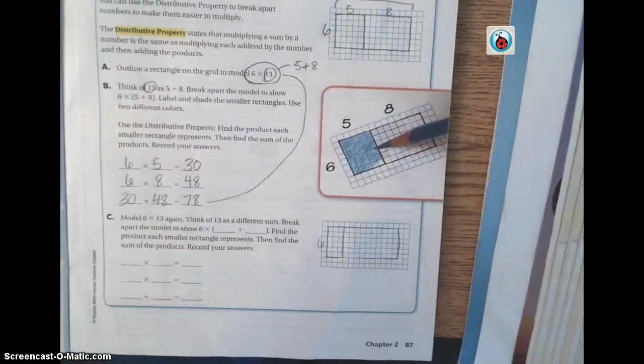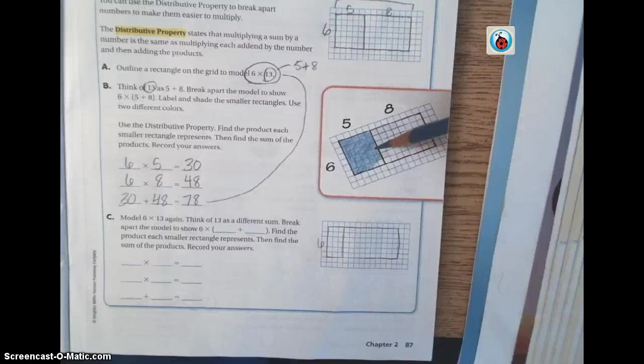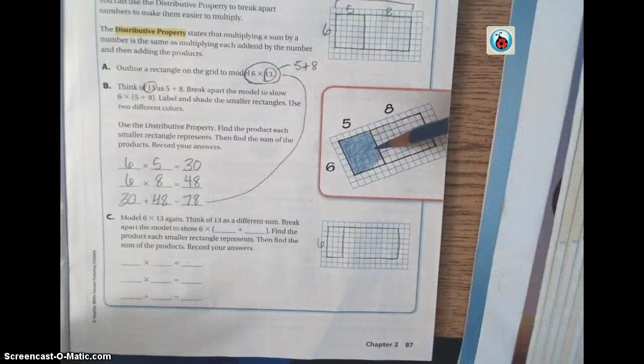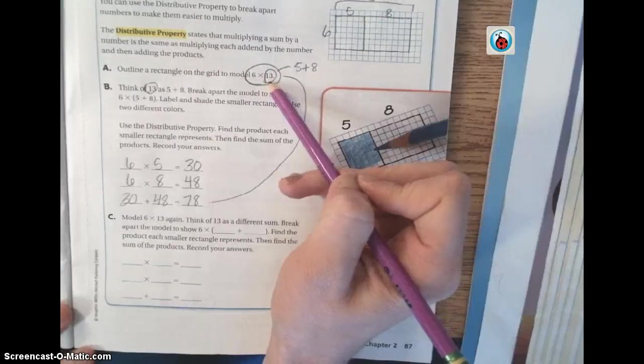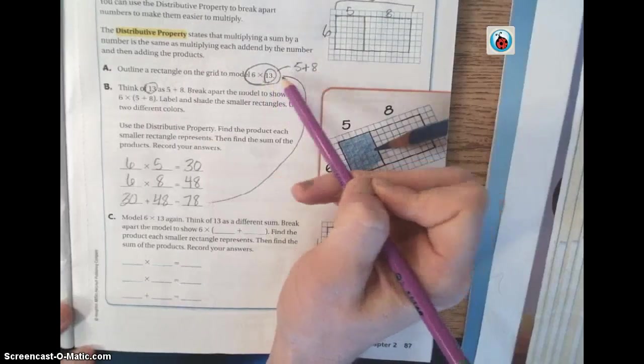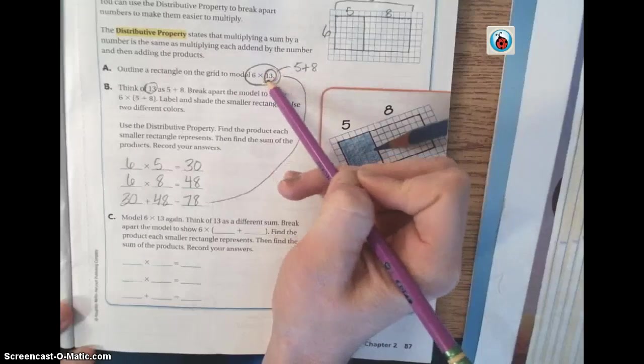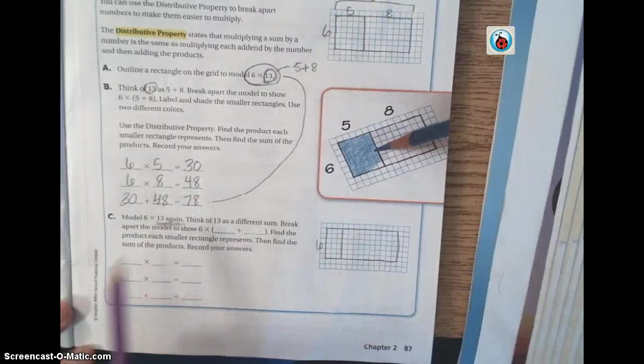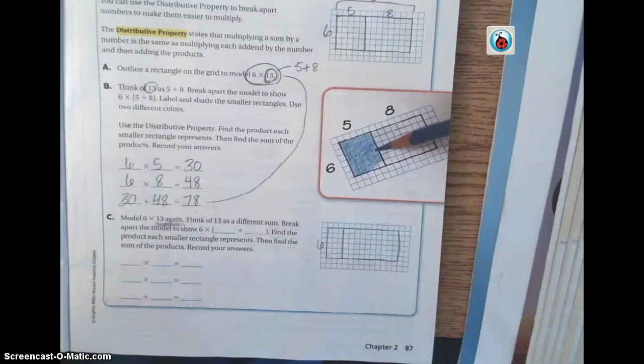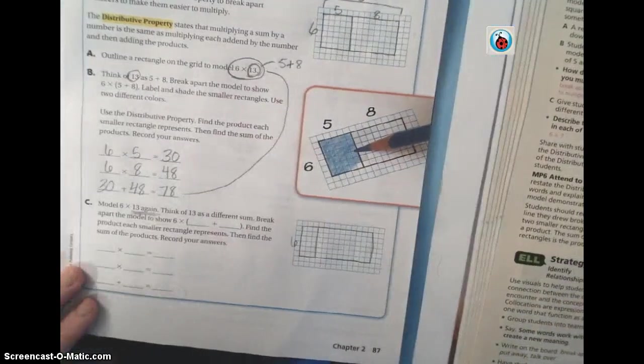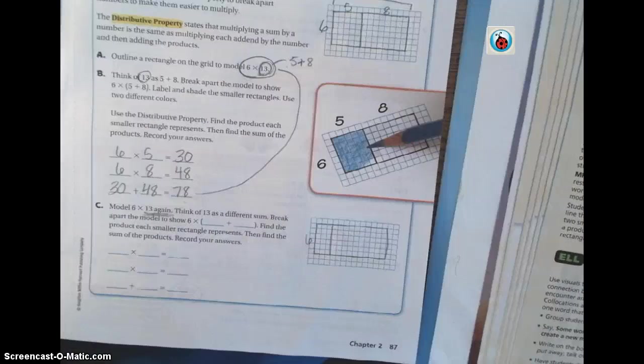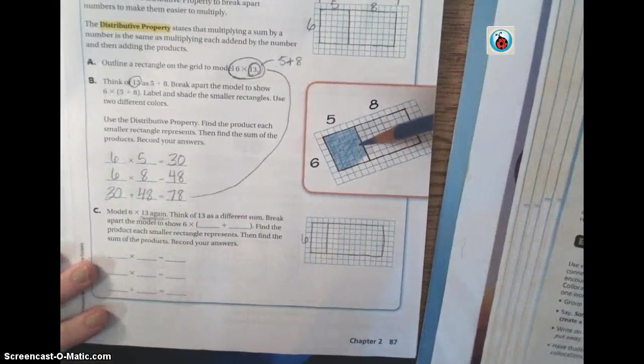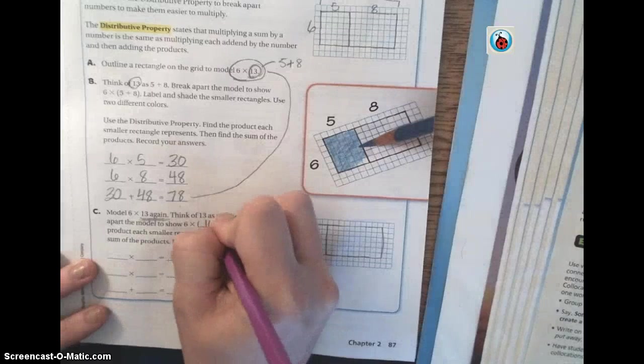Down here on C, it says model 6 times 13 again. Think of 13 as a different sum. We paused for a second. I asked my class if they had any questions. One of the questions was, where did you get the 5 and the 8? We basically just broke the number 13 down. What two numbers added together could equal 13? For this one, let's think of another way to make 13. Who can think of another way to make 13? Camden? 10 plus 3. Let's use that.